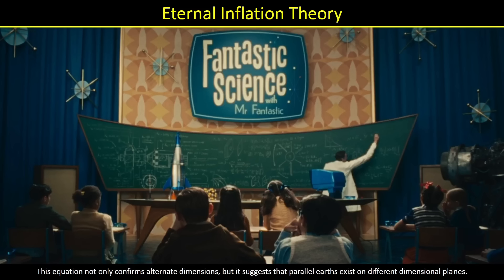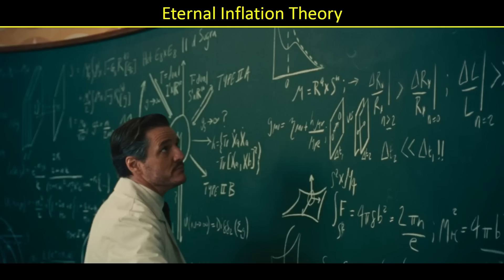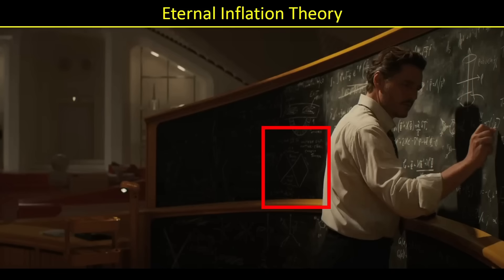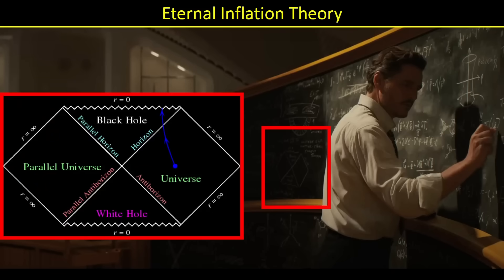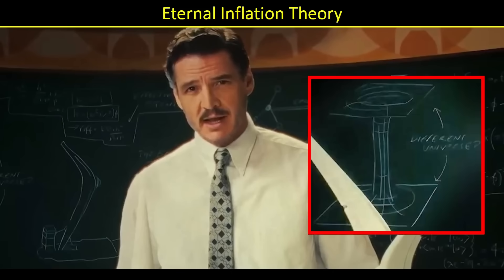In the Fantastic Four movie, Reed discusses an equation that not only confirms alternate dimensions but suggests that parallel Earths exist on different dimensional planes. Keep in mind he understands quantum physics — if he was talking about the many worlds theory, he would have said branched universes. Instead he's talking about parallel Earths on different dimensional planes. We see that in his diagrams, which look like parallel Earths — not branched, not connected, but parallel. On his chalkboard there's also a rough sketch of a Penrose diagram, and the actual scientific theory behind it takes you from one universe to another parallel universe via a black hole. He even had on his chalkboard the idea of teleporting Earth to a parallel universe.